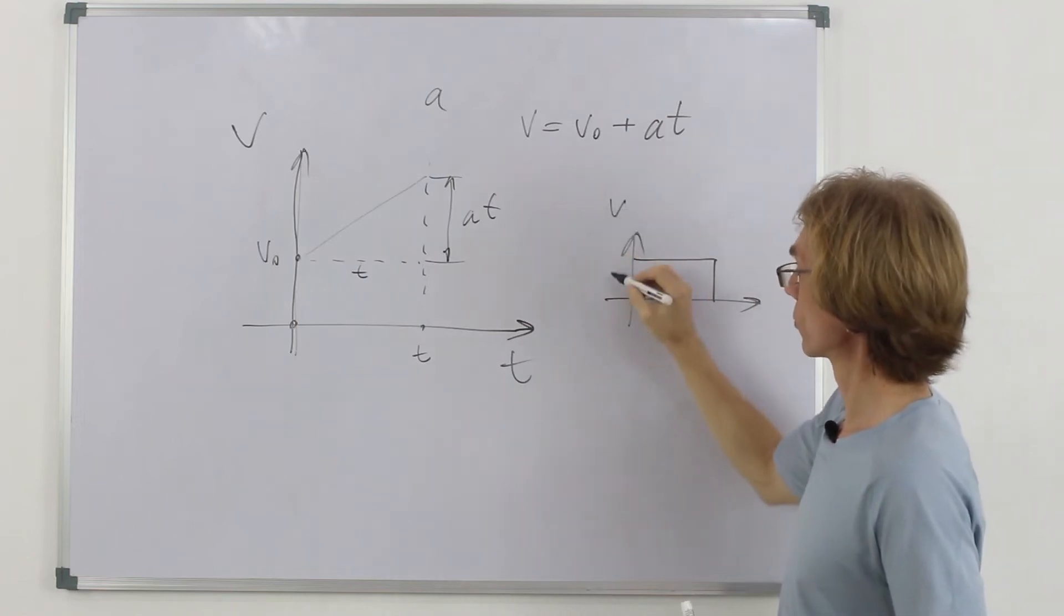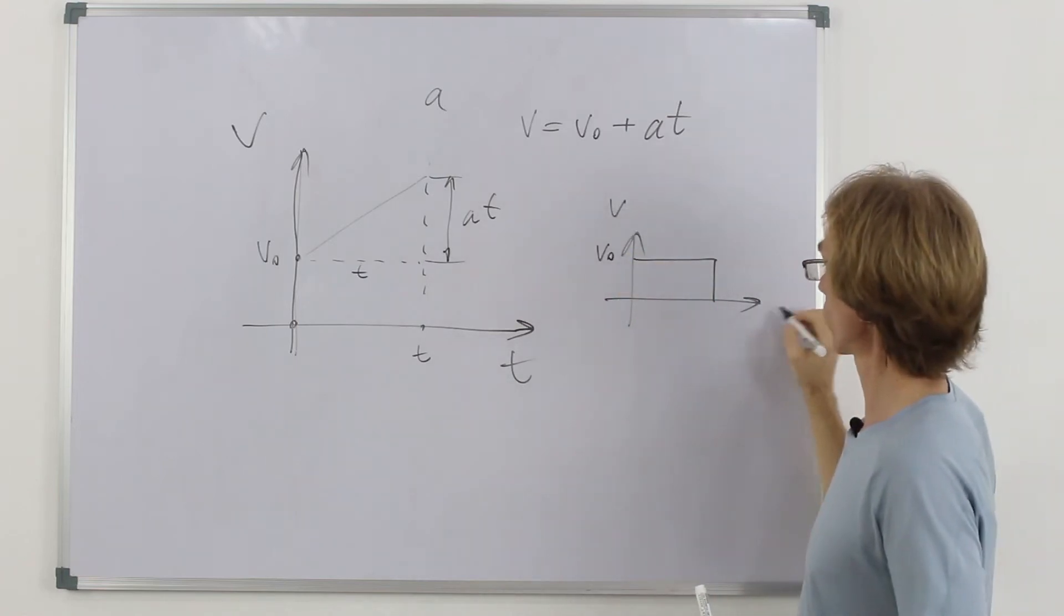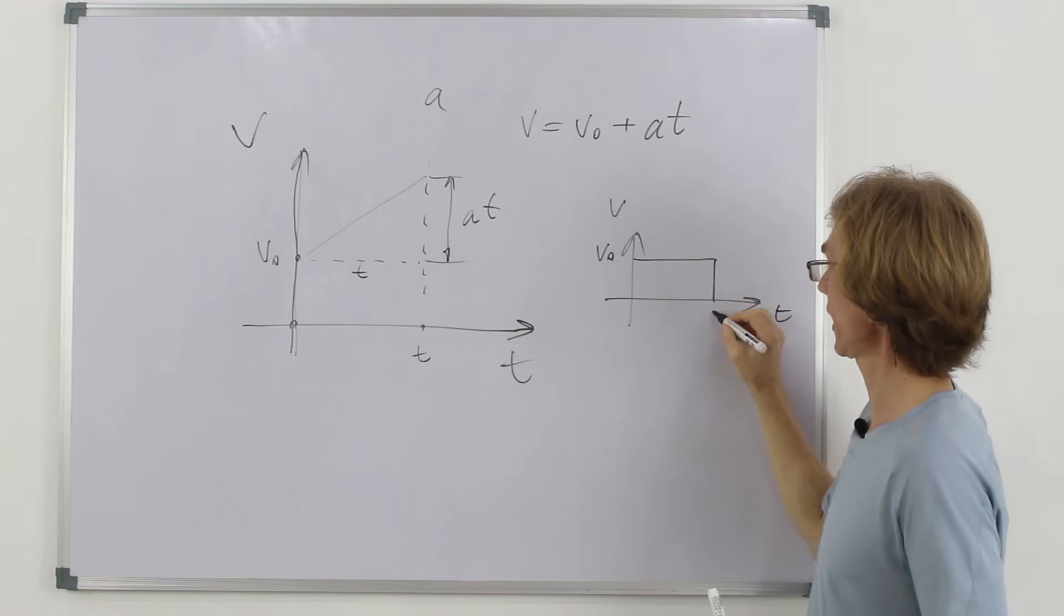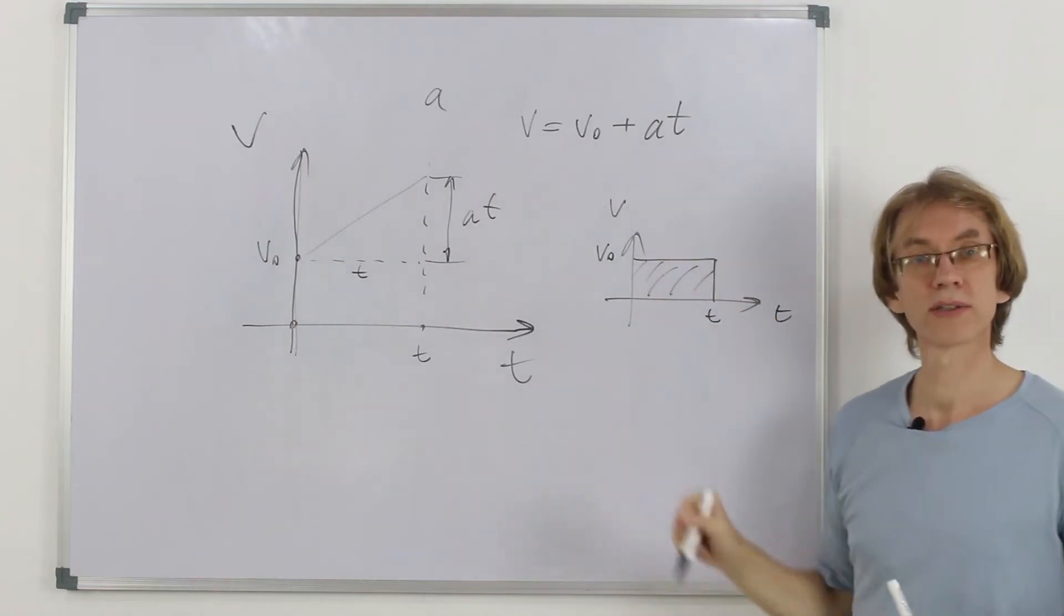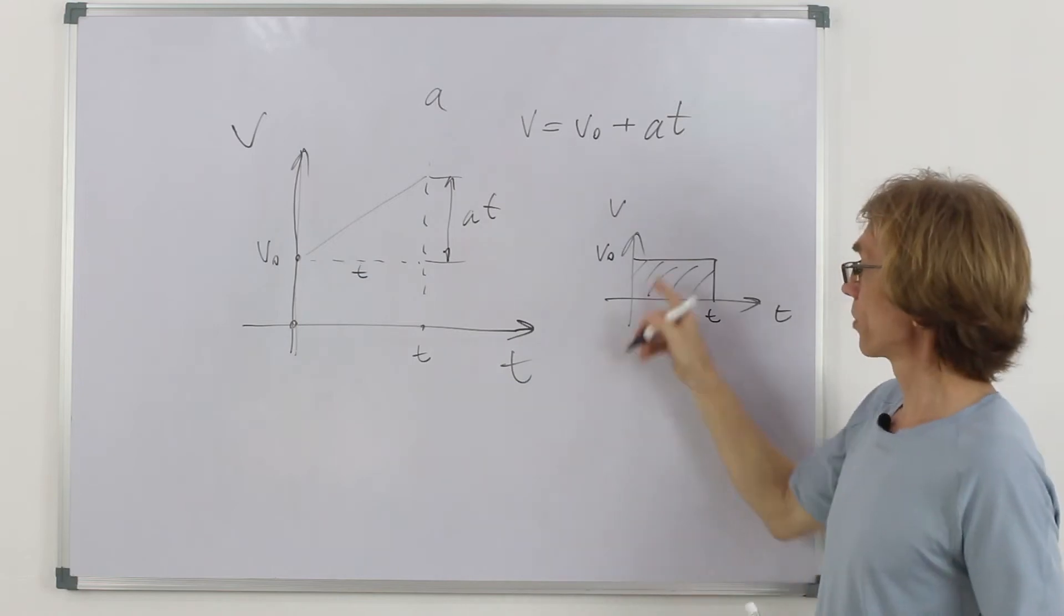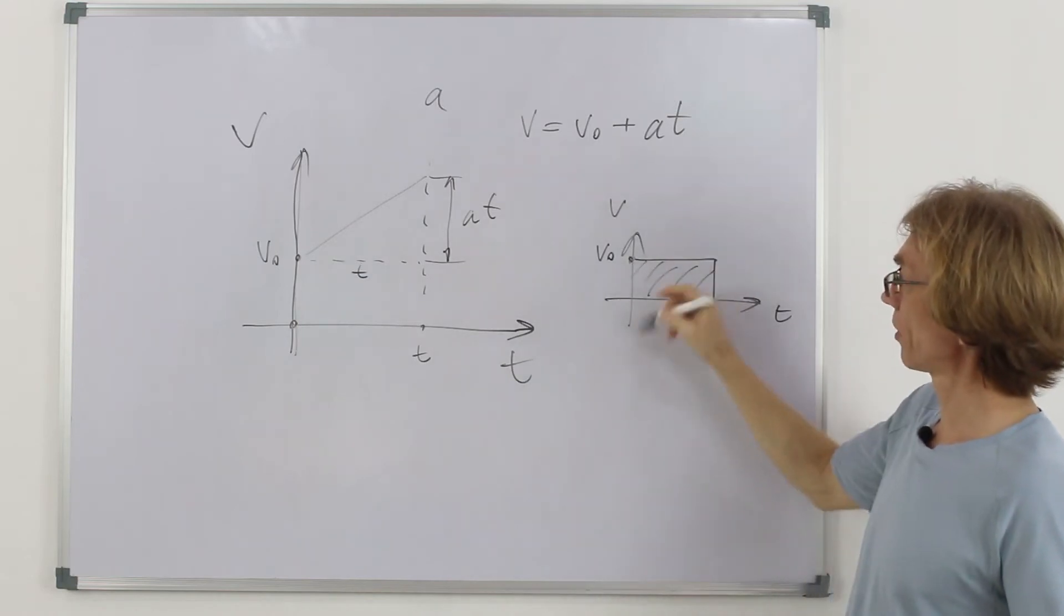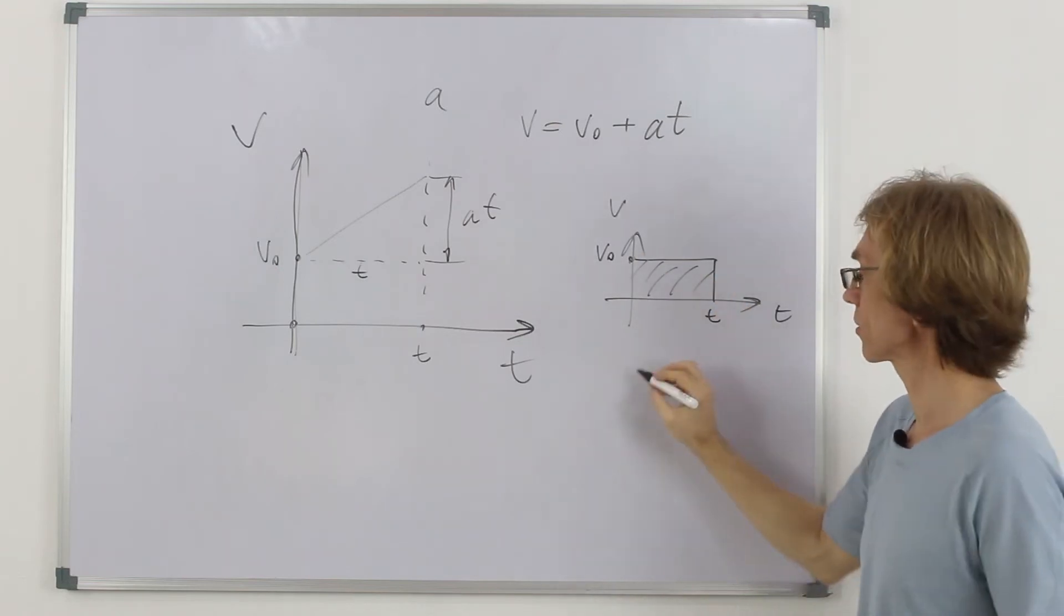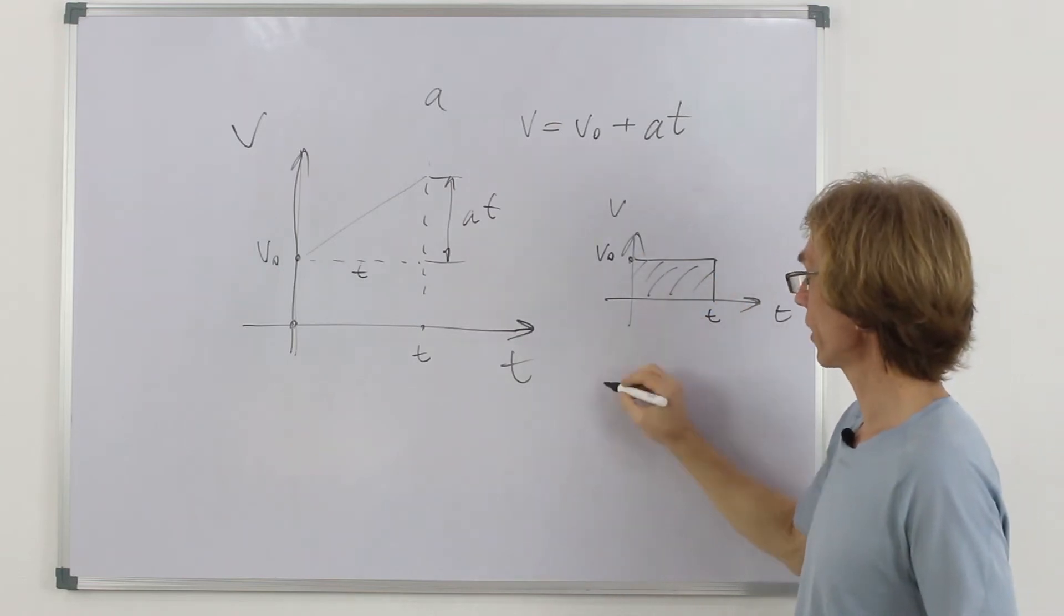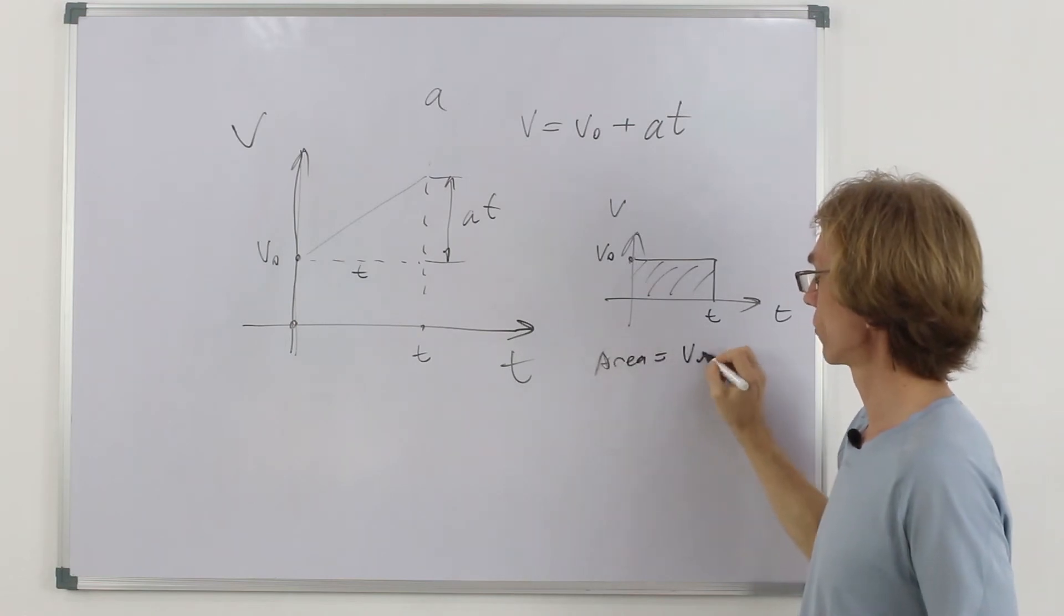For example, this is velocity and this is some v0. This is time scale. This is t. And let's find out how big is this area. We just multiply v0 by t because it's a rectangle. So, the area is v0 t.